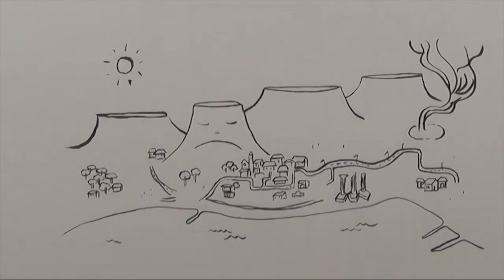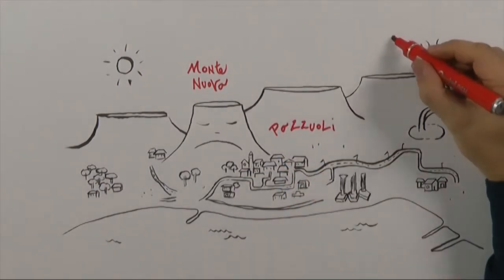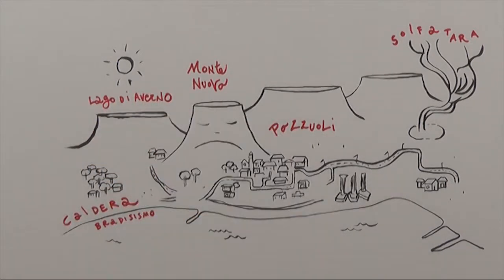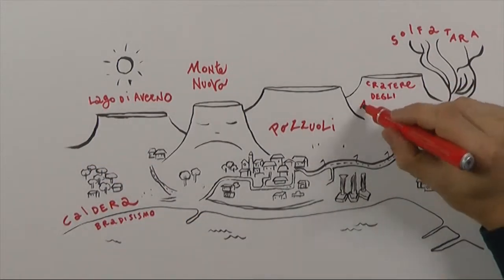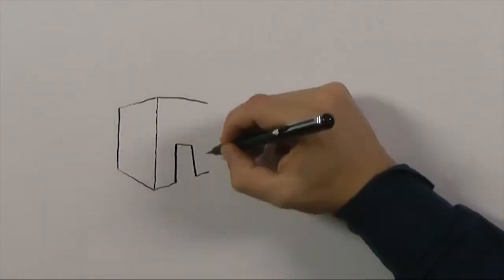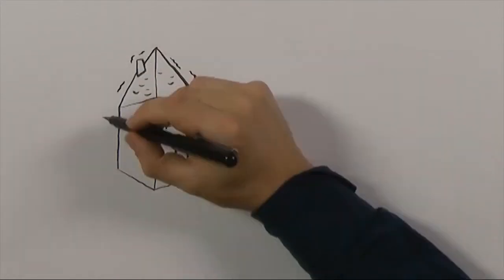The ground in Campi Flegrei always moves. It rises up and slowly subsides over and over again. This is caused by the continuous underground movement of gas or magma. All these ups and downs, however, are not enough to establish when the volcano will erupt.